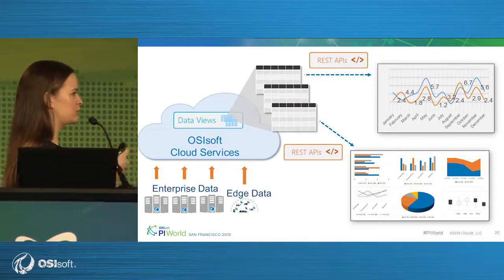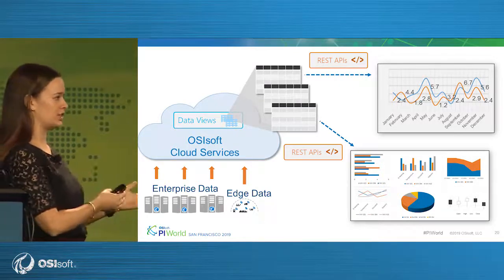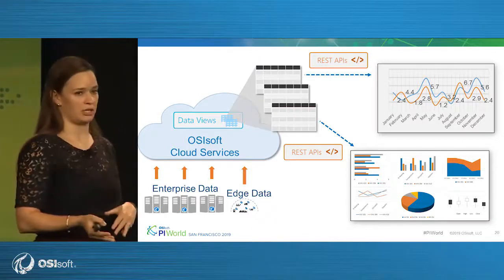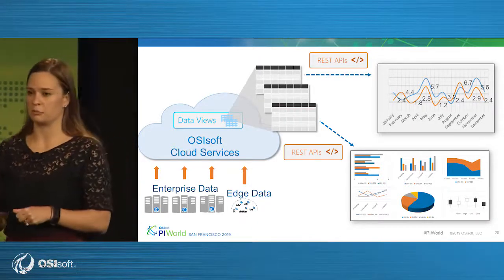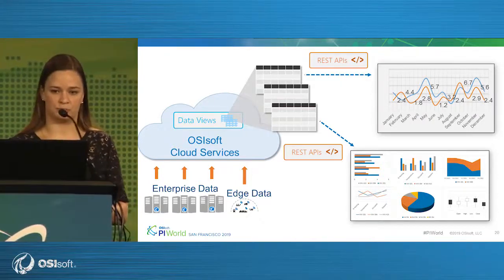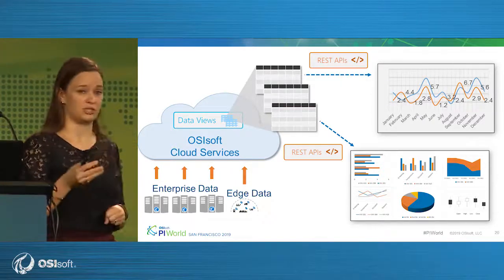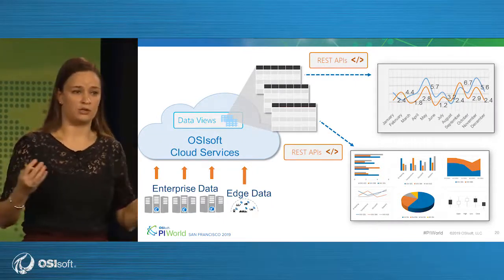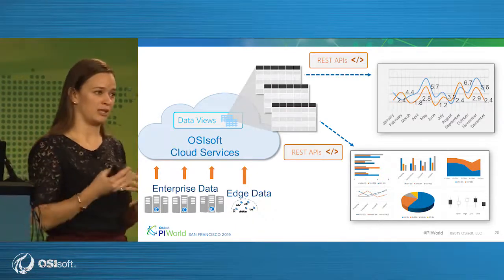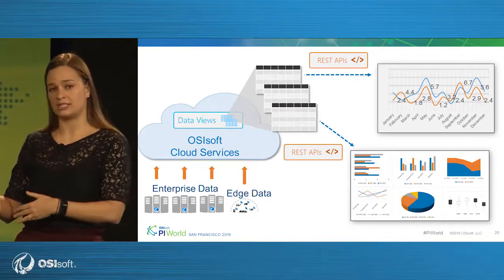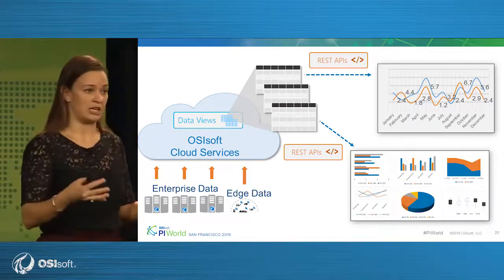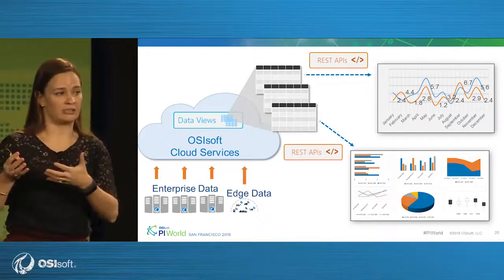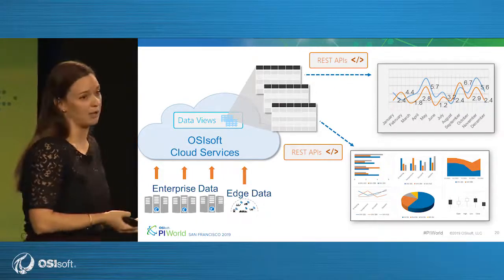Once you've queried it, you can surface it to applications to do machine learning, support the business intelligence reporting use case, and more visual analytics — lots of different use cases you can support with these data views. One interesting thing with OCS is that you can use it as an aggregation layer, supporting multiple PI system connections as well as ingress from different edge sources and other cloud systems, so data views give you a way to bring all information together and submit it to your applications for analytics.